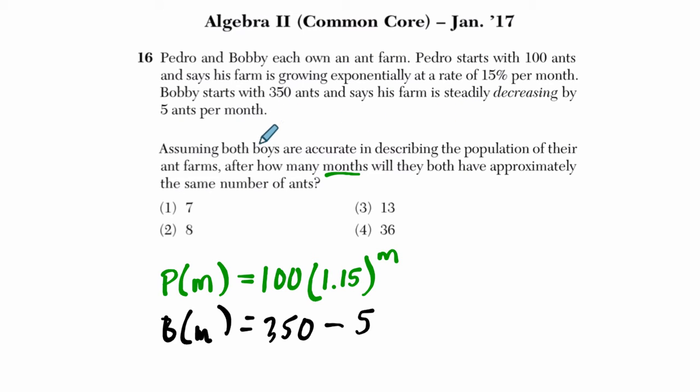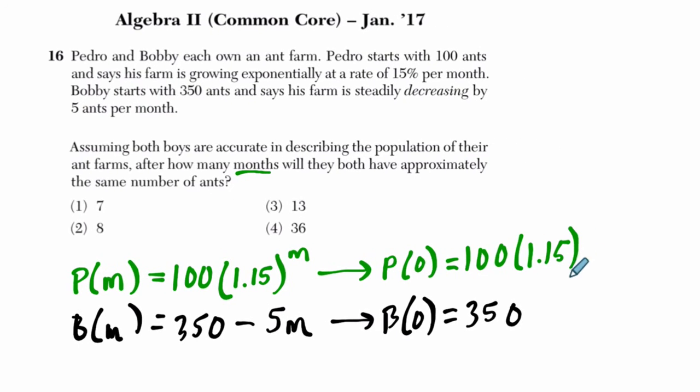Now this one, every month that passes, he's losing 5 ants. So I'm just thinking at month zero, that Pedro should have 100 ants, and Bobby should have 350. And I'm going to just check that. So this means that at month zero, at the beginning, Bobby has 350 minus 5 times zero. So that's 350 ants. And then Pedro should have 100 ants, as the problem said, and 100 times 1.15 to the zero. That's 100. Because 1.15 to the zero is just 1. So I'm just checking, do my equations make sense? Yes.